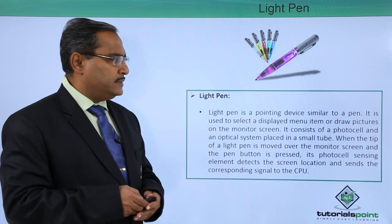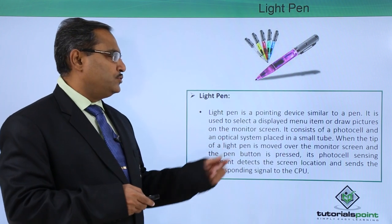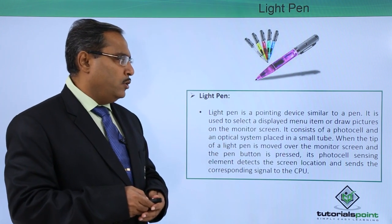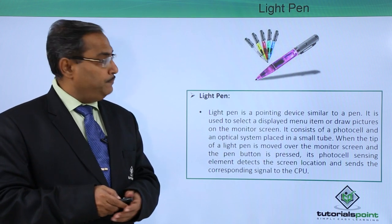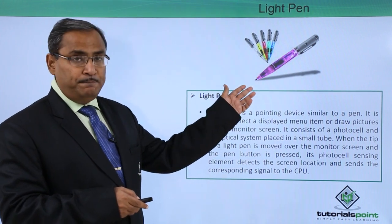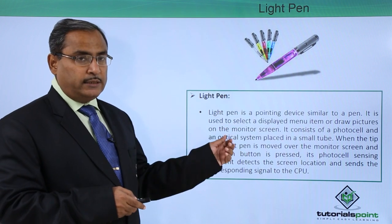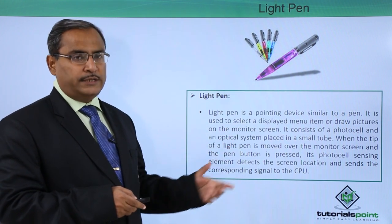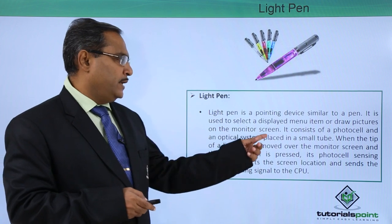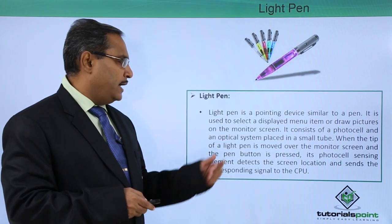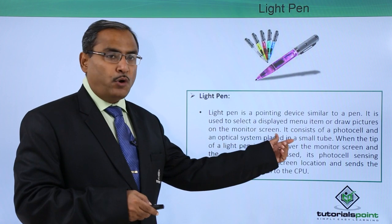Light pen is a pointing device similar to a pen and it is used to select a displayed menu item or draw pictures on the monitor screen. Here you can see this light pen — these pens are basically used to select a particular option from the menu or to draw some pictures on the computer screen. It consists of a photo cell and an optical system placed in a small tube.